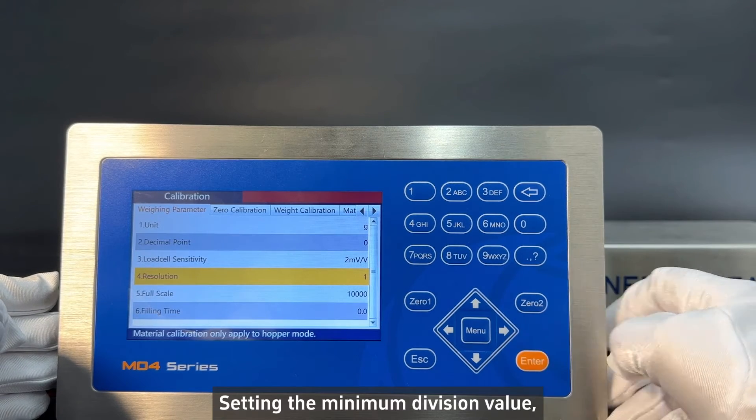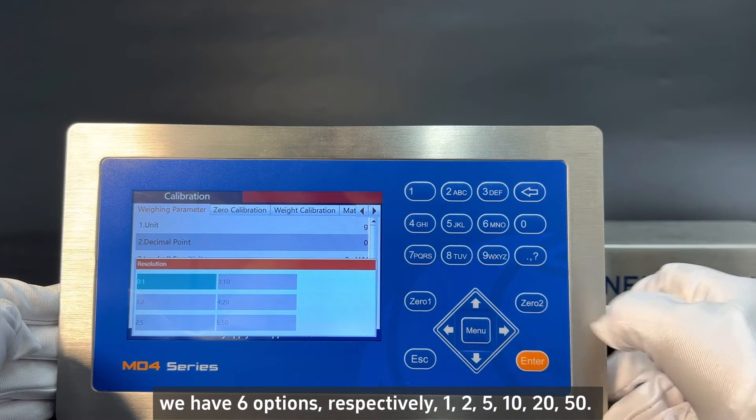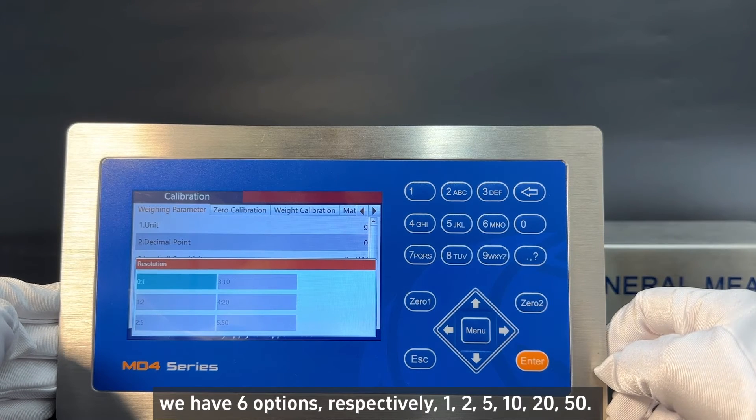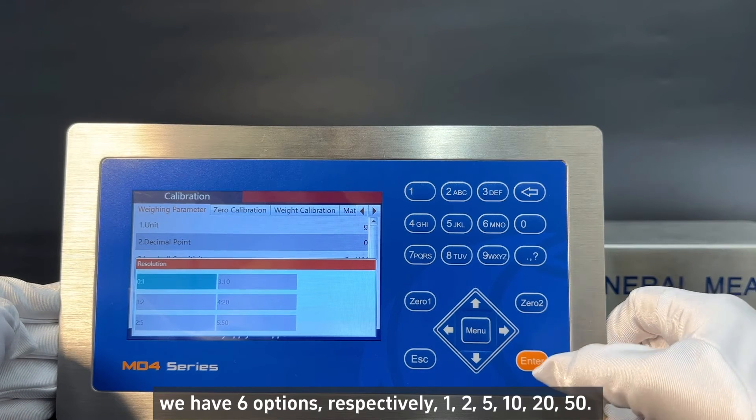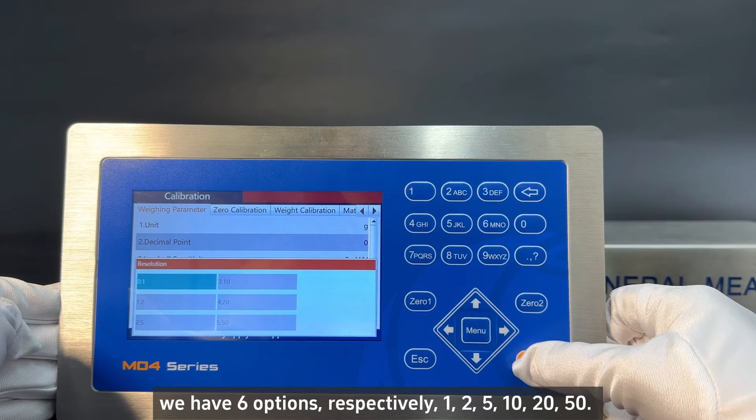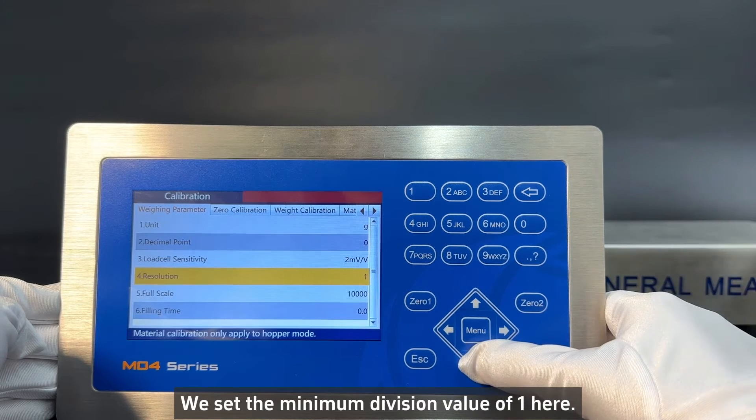Setting the minimum division value. Press the enter. We have six options, respectively: 1, 2, 5, 10, 20, 50. We set the minimum division value of 1 here.